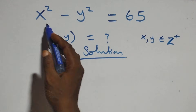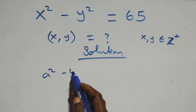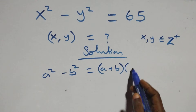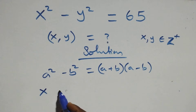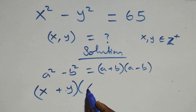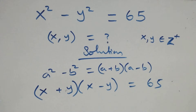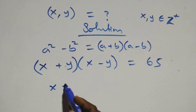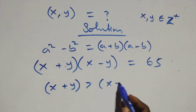From what we have here, we can apply the difference of two squares: a² minus b² equals (a+b)(a−b). So the equation becomes (x+y)(x−y) = 65. Since x and y are members of positive integers, it implies that x+y should be greater than x−y.